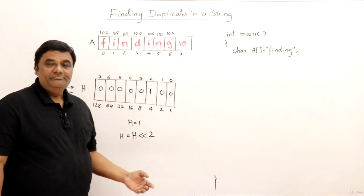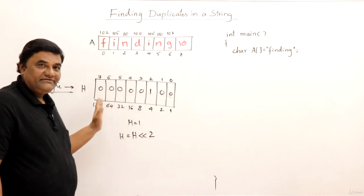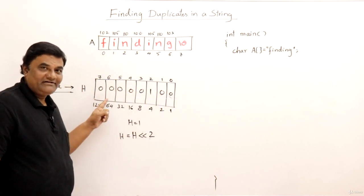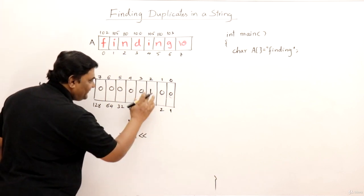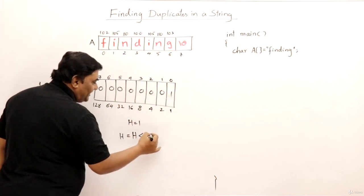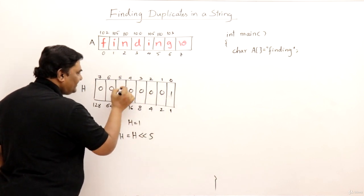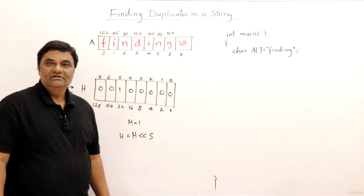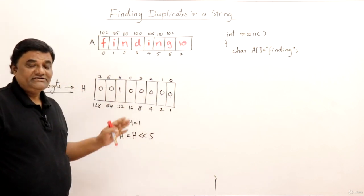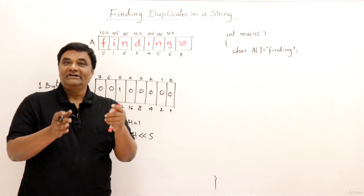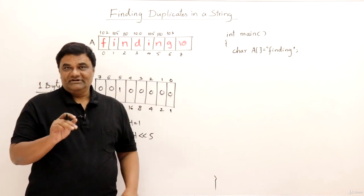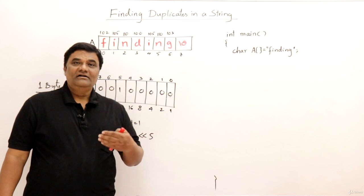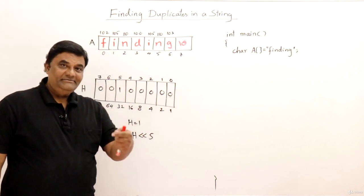By shifting the number to the left we are able to increase it by multiples of two, and the digit is also shifting. If I say H left shift by five, starting from position zero, the one moves five places and comes to position five, making the number 32. So we can shift digits using the left shift operation.